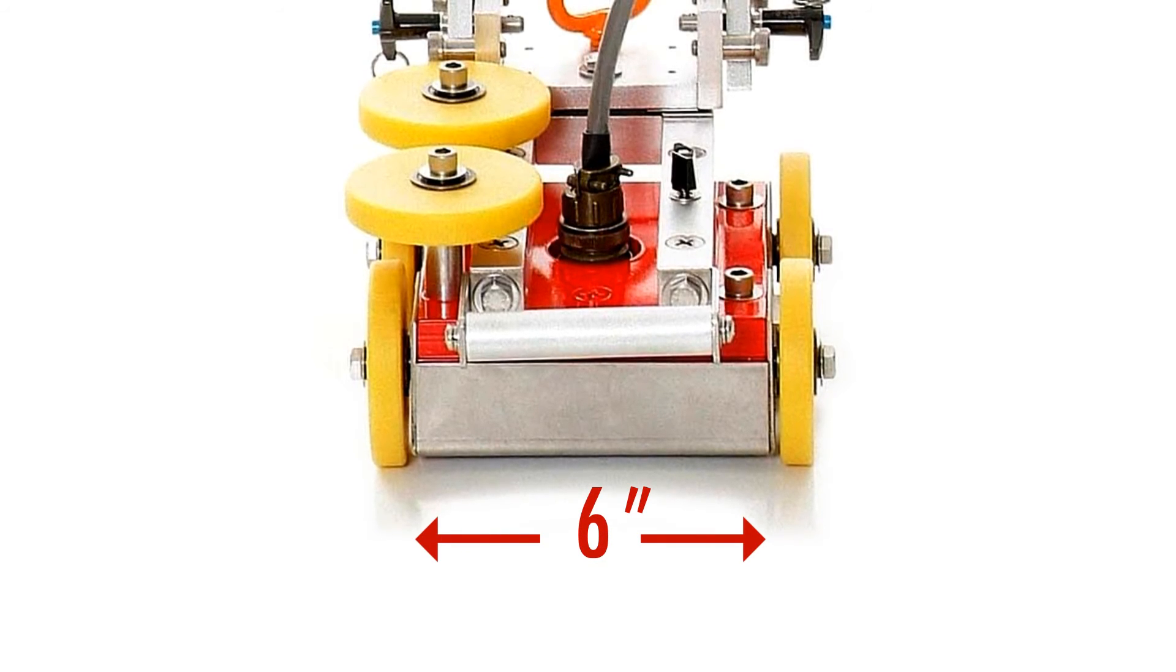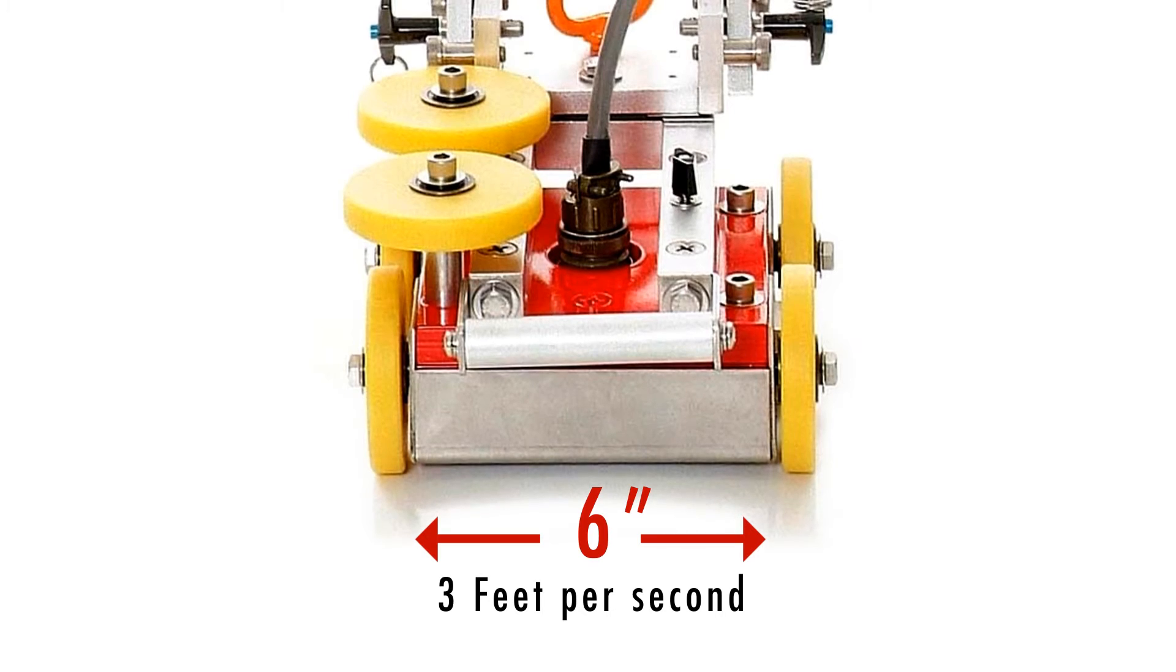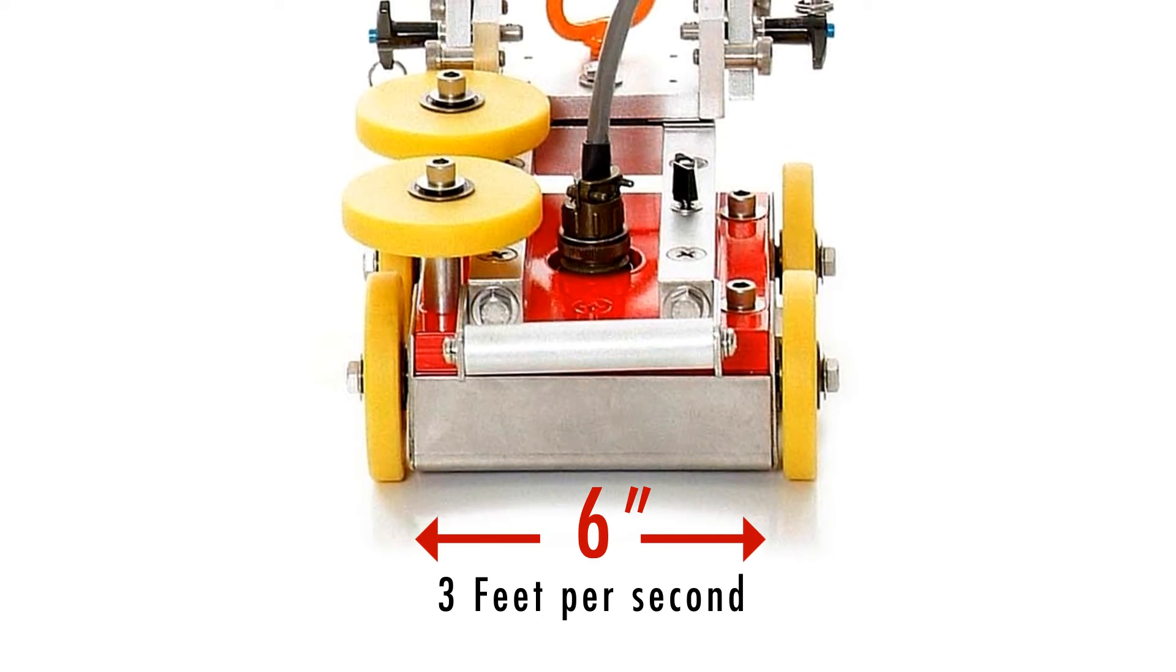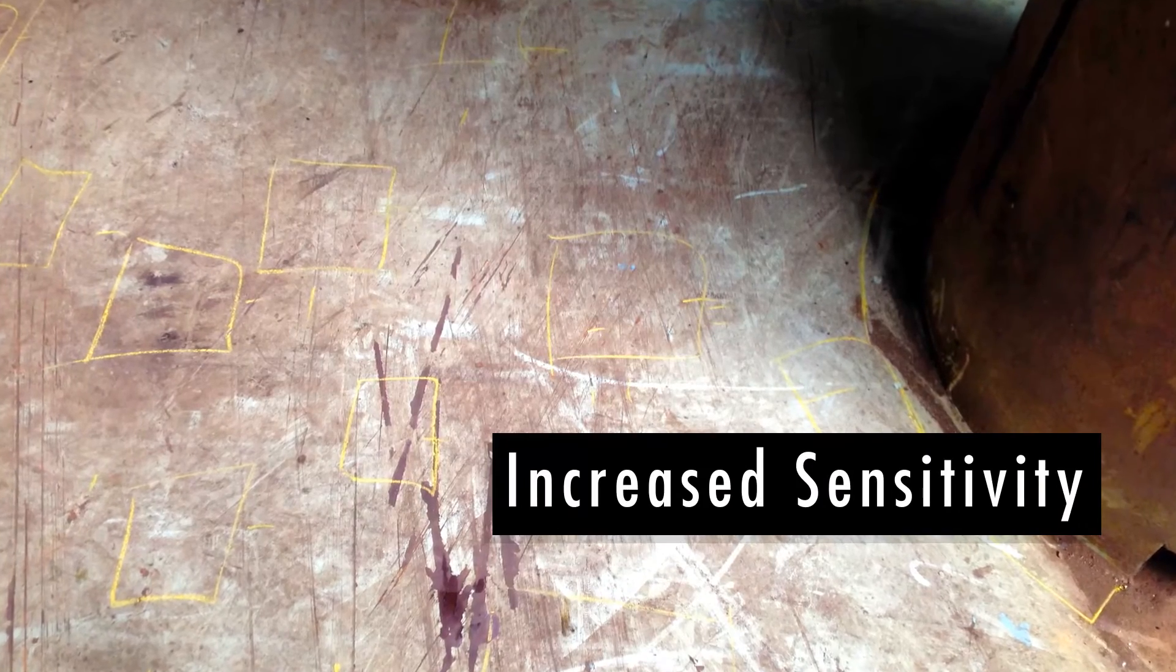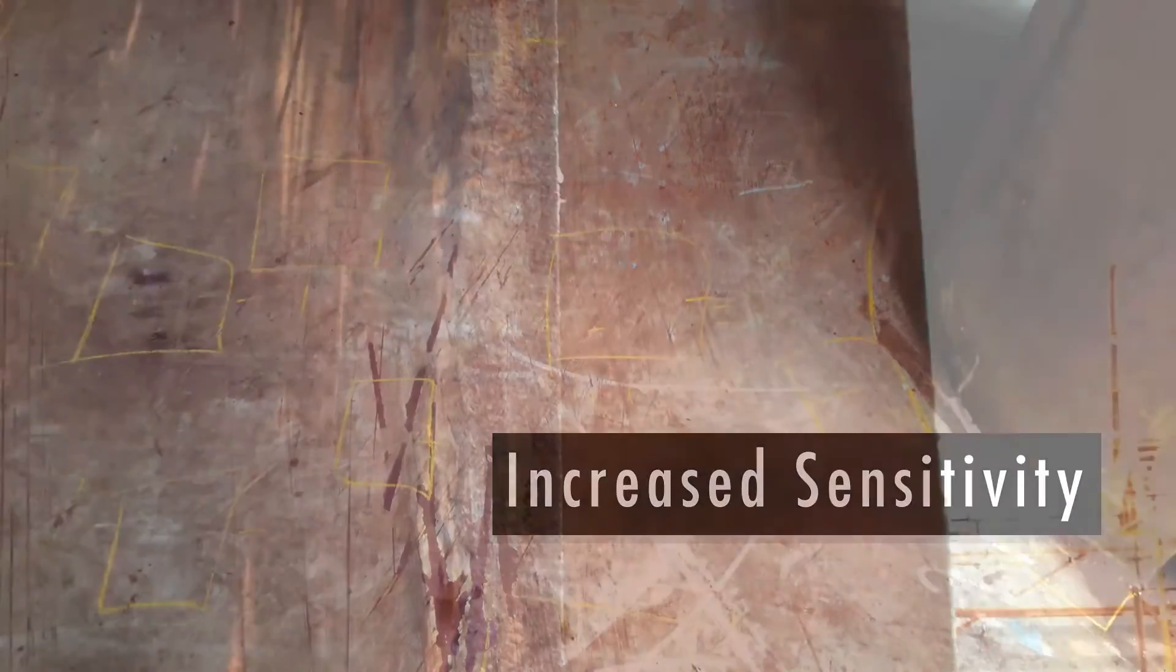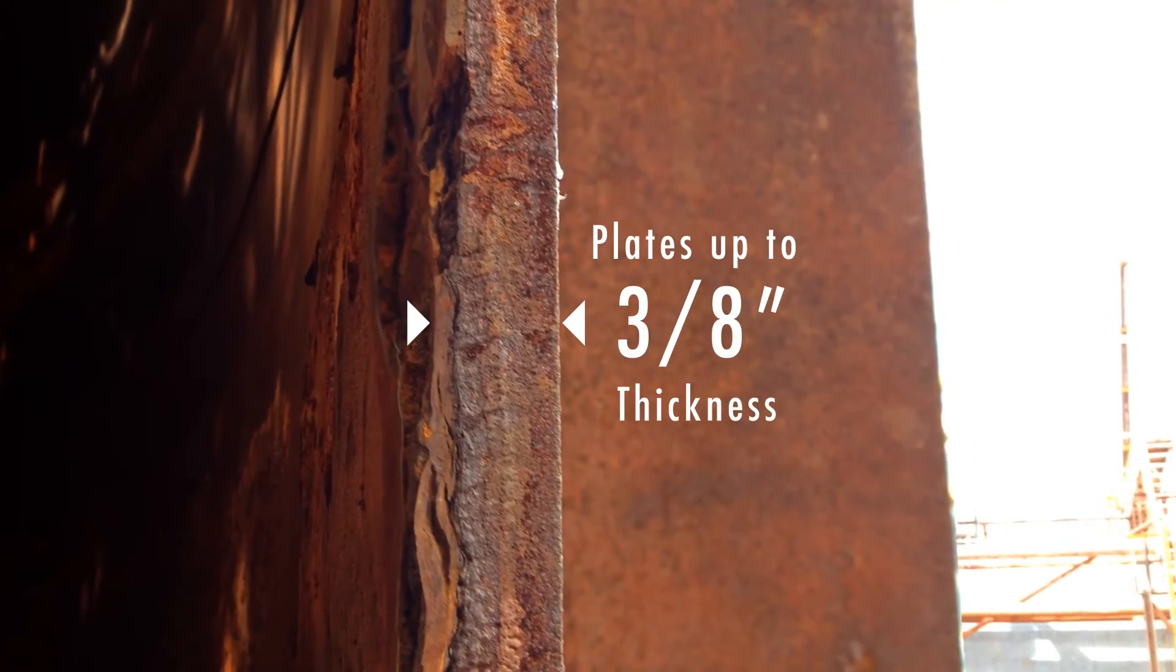With a 6-inch scan width and a scan speed of 3 feet per second, the edge scan is fast and easy to use. The increased sensitivity can help find smaller defects through non-magnetic coatings and plates of up to 3-eighths of an inch thickness.